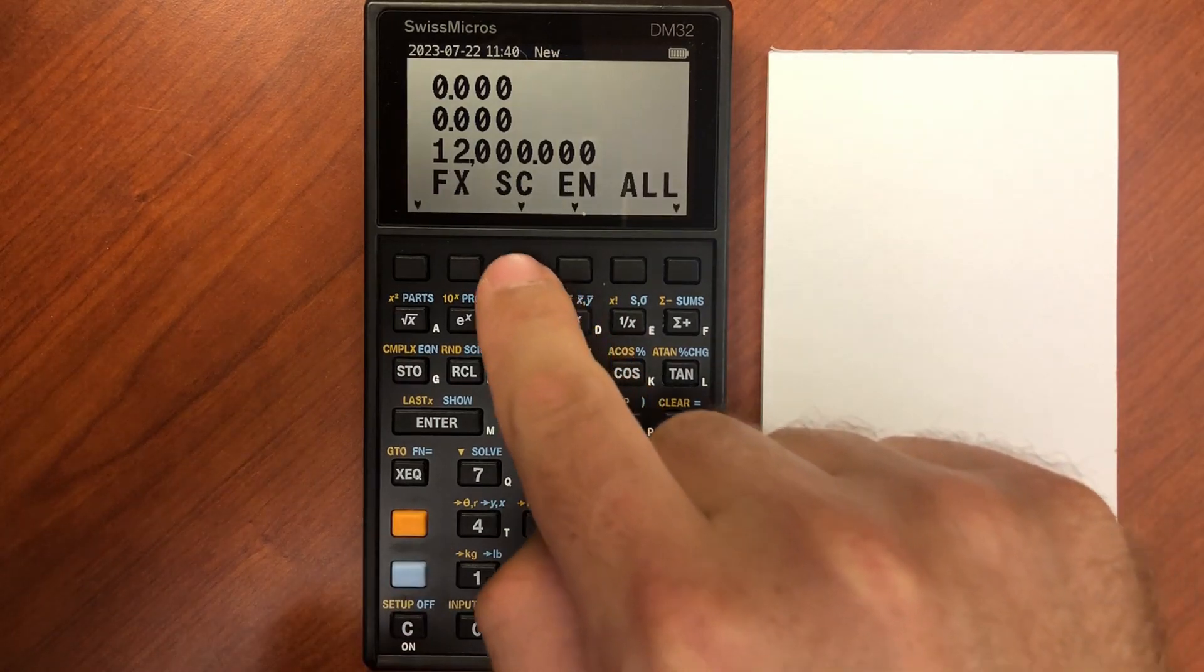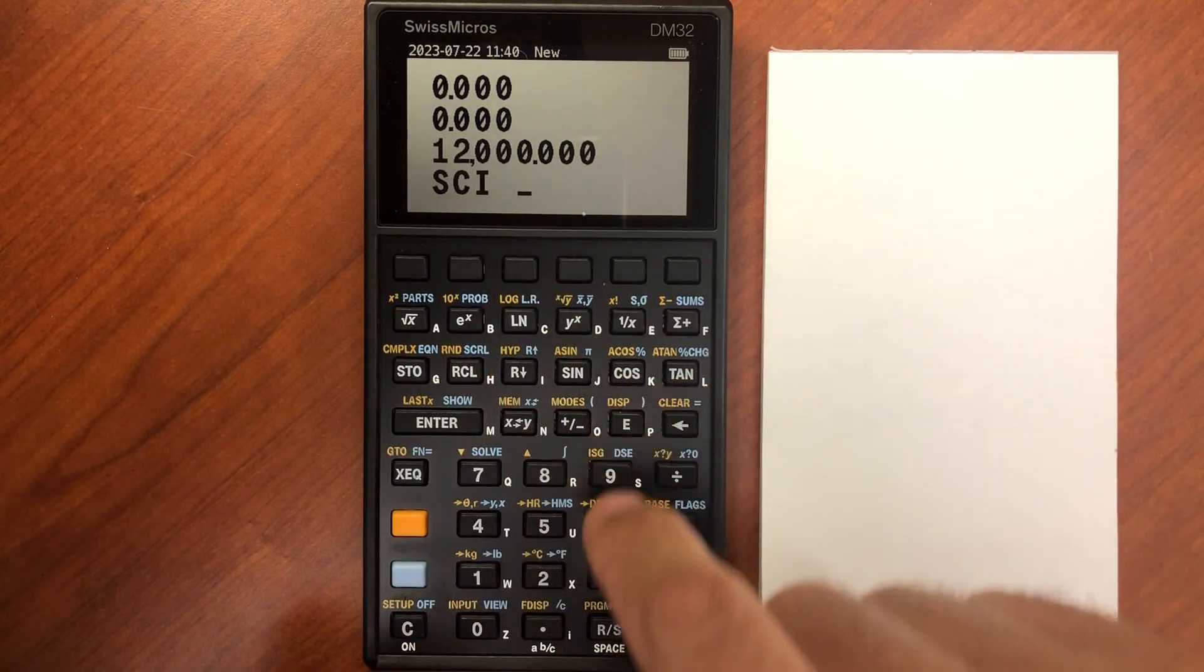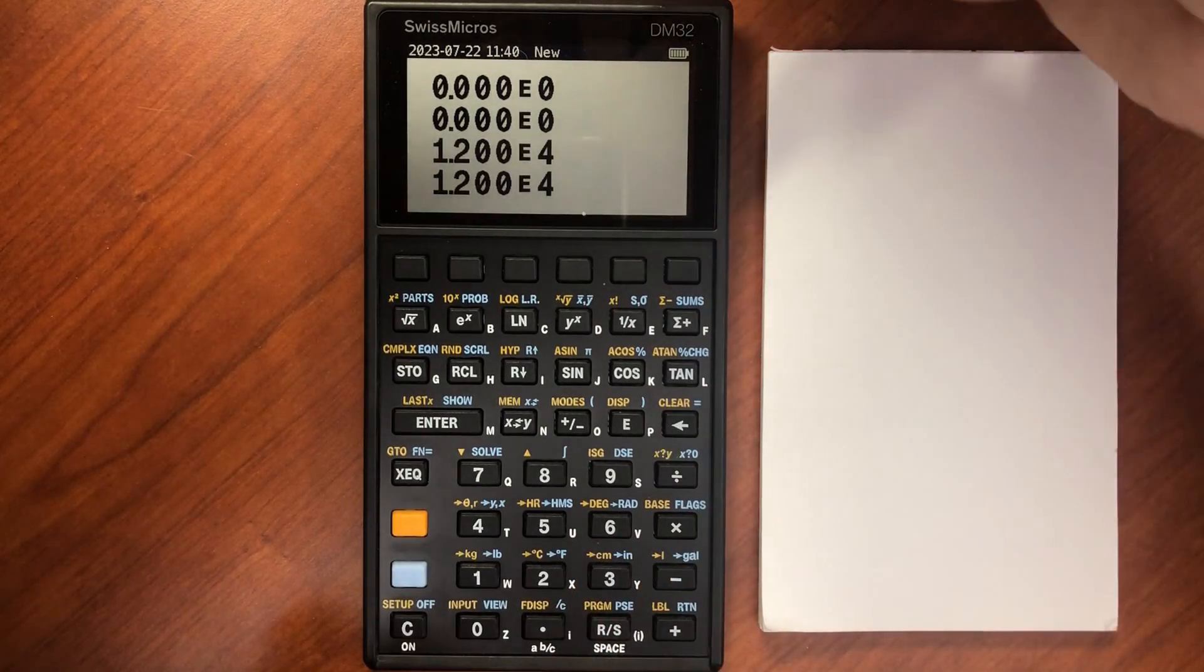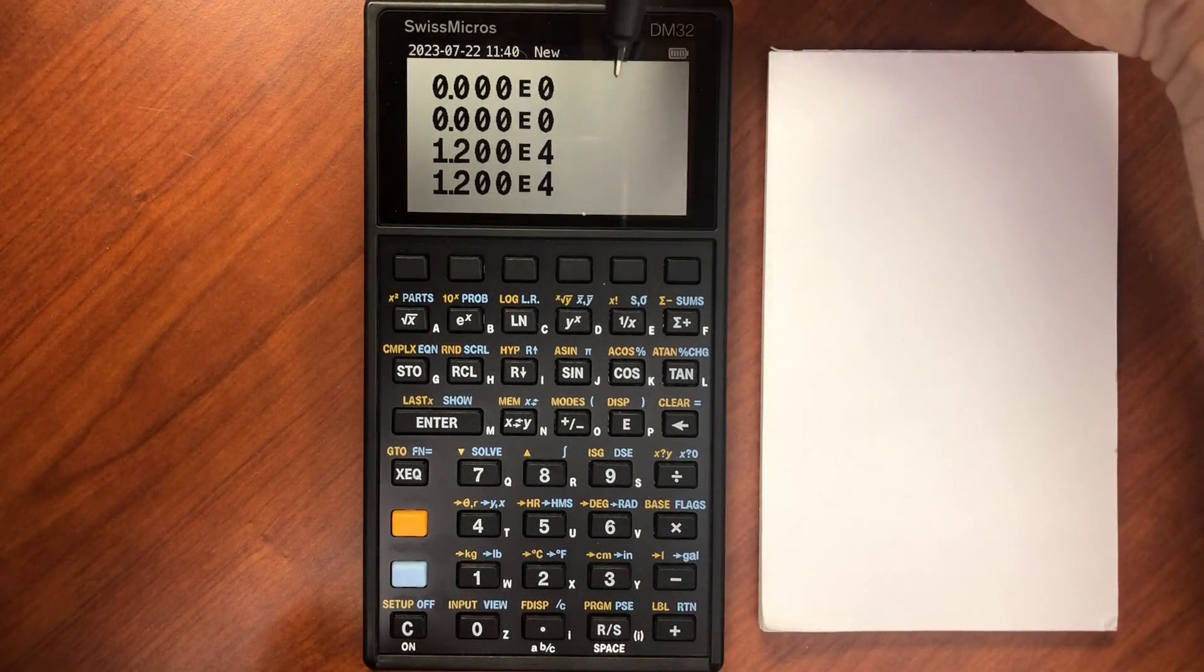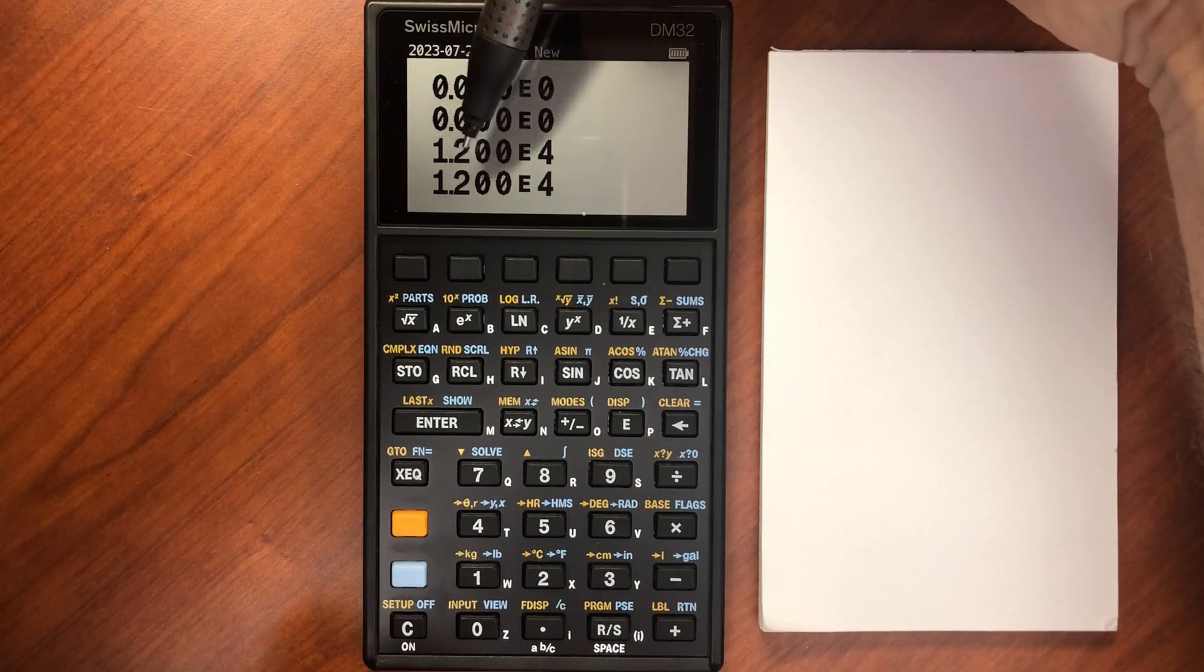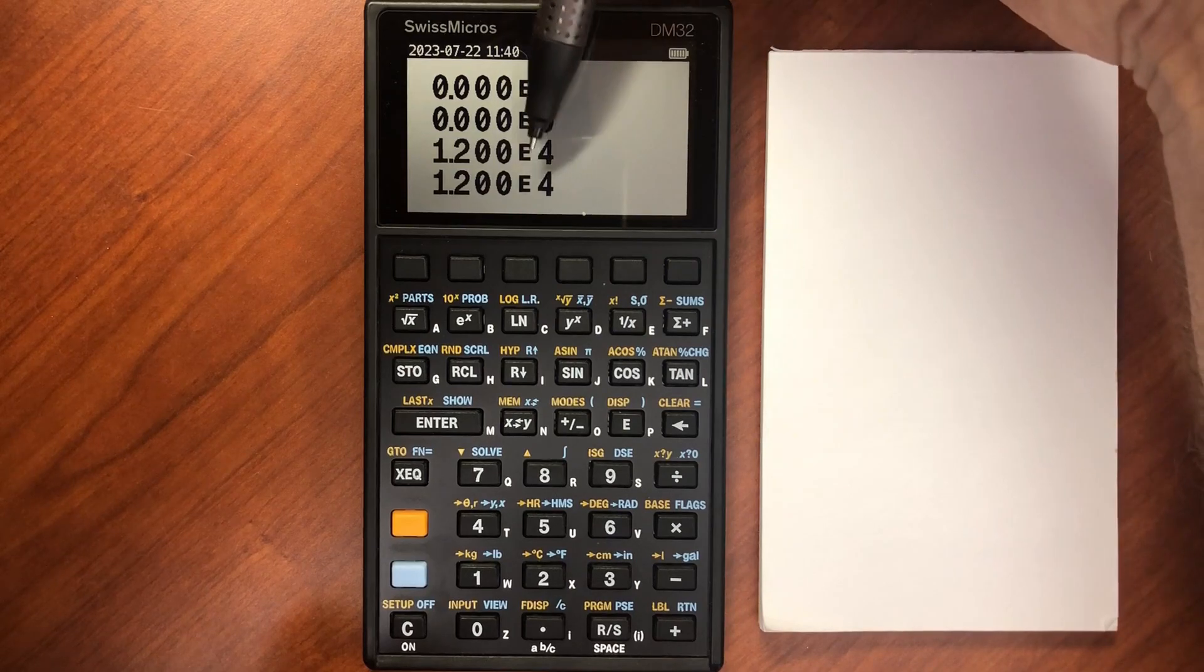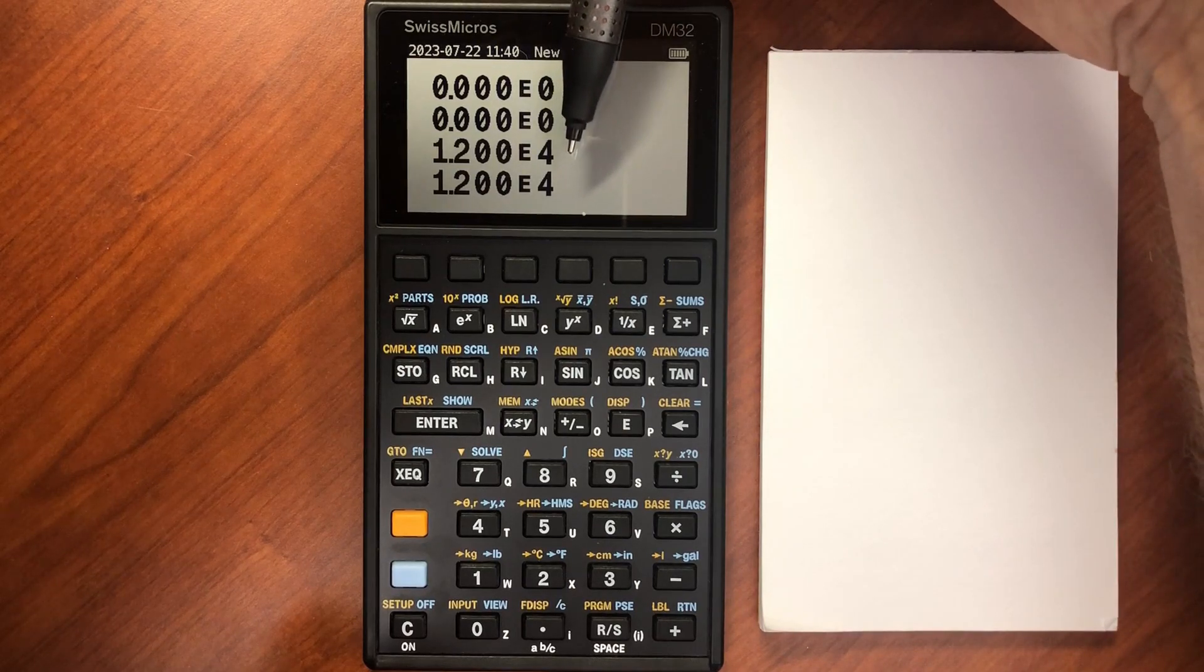If I go into scientific mode, and let's say again we want three digits after the decimal point. It does one digit before the decimal point with the precision I specified after it, and then the power that it's raised to.